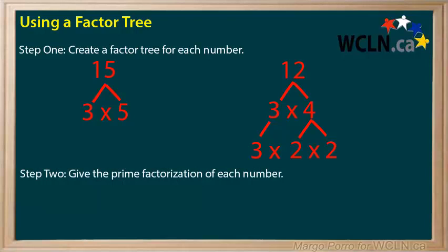Step 2. Give the prime factorization of each number. These are the numbers at the end of each line in a factor tree. The prime factors that multiply to make 15 are 3 times 5. The prime factors of 12 are 3 times 2 times 2.